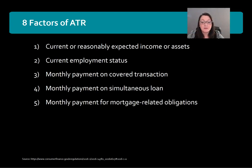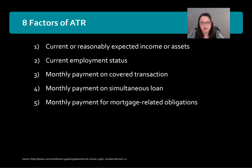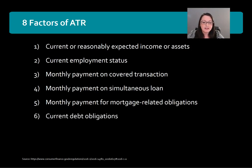Next is monthly payment for mortgage-related obligations. They need to take into account taxes, insurance premiums, condo or homeowners association dues, assessments, fees, or any similar recurring charges — all of which must be factored into monthly obligations to determine the borrower's ability to repay. Next is current debt obligations, which is pretty straightforward: what monthly debt obligations does the borrower have? That should include alimony and child support payments — a very important factor.